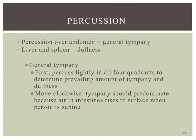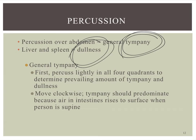After listening, move on to percussion. The two typical sounds in the abdomen are timpani and dullness. If you percuss lightly in all four quadrants, you'll hear a timpani sound, because air in the intestines rises to the surface when the person is supine. Dullness would be heard over the liver, spleen, or any solid organ. Also, if someone is constipated or has an impaction, you'll hear dullness over that area as well.